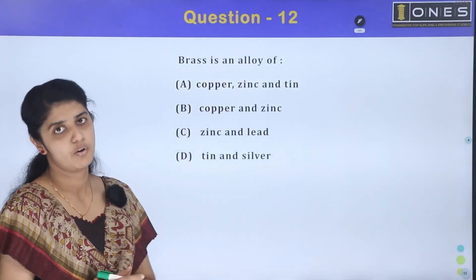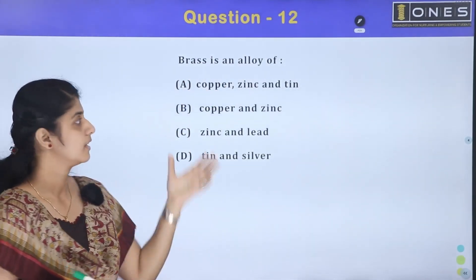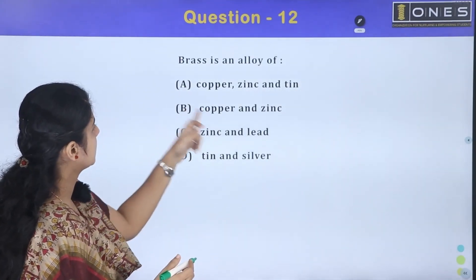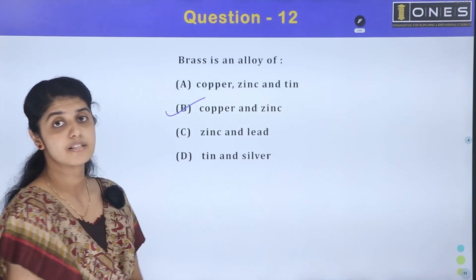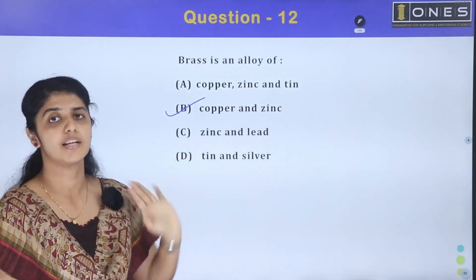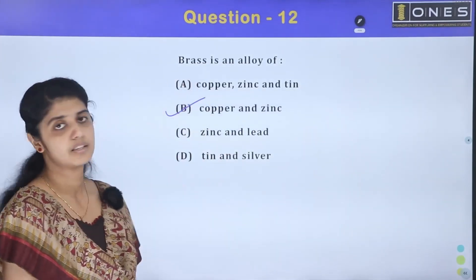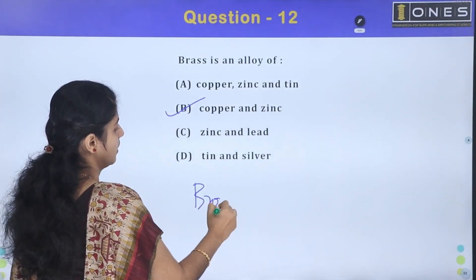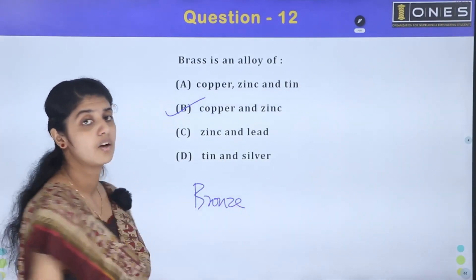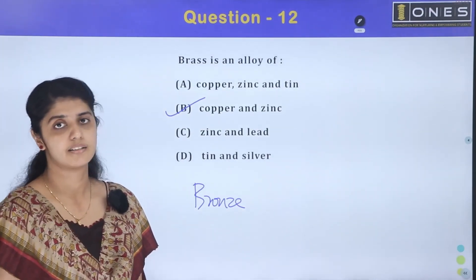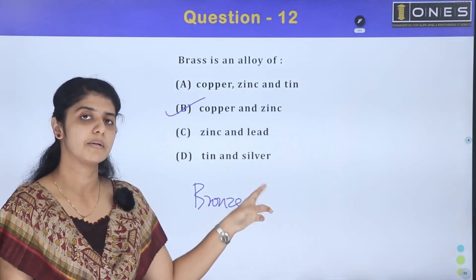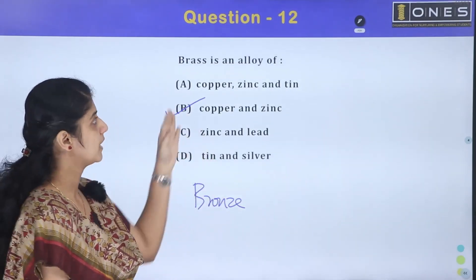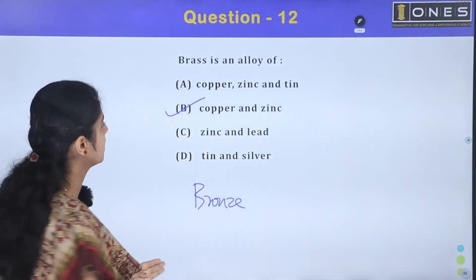Question number 12: Brass is an alloy. If you have brass and copper, that is brass. Bronze is copper plus tin. A fuse element is a combination of lead and tin. Bronze is a combination of copper and tin.